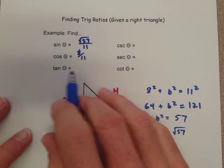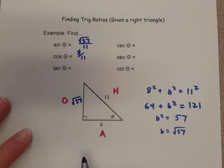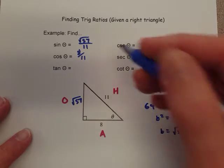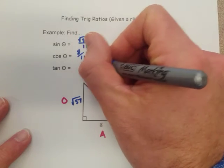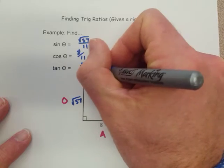And then the third one here, tangent, is opposite over adjacent, and so that is square root of 57 divided by 8.